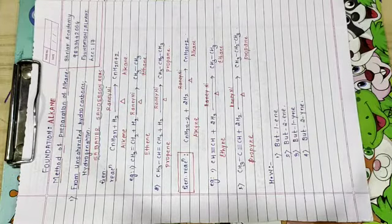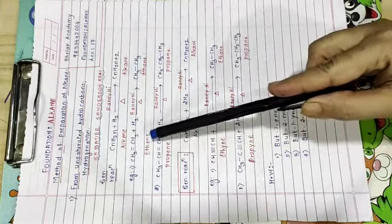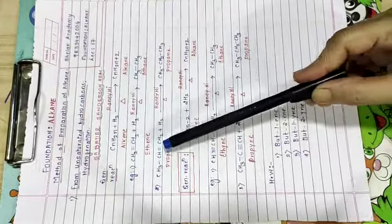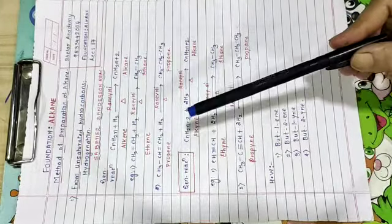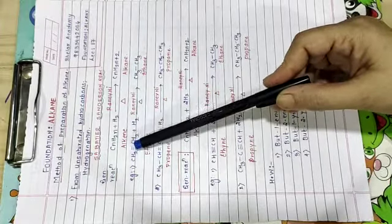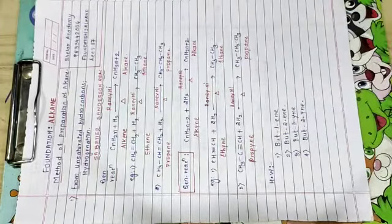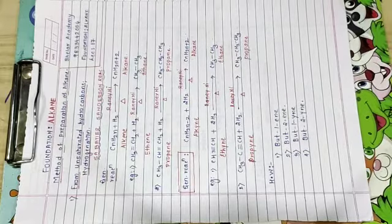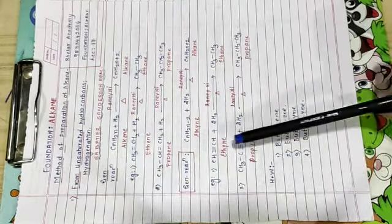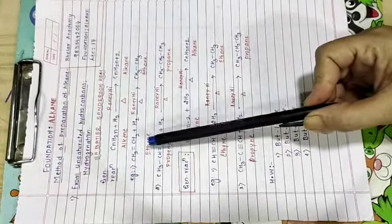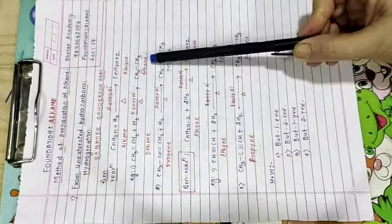The very first example. See, it is ethene. Eth means two carbon atoms. Ene means it has got a double bond between them. So what is the name of the reagent? The name of the reagent is ethene. Now ethene se mujhe kya mila? I got ethane.